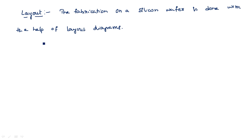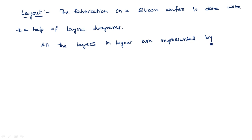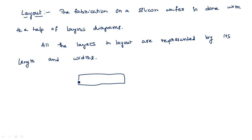Layout consists of all the layers in terms of length and width. All the layers in the layout are represented by their length and width. Suppose if you are drawing any line, you need to know what is the length of this wire and what is the width of this wire. This represents the width and this represents the length. Similarly, for every layer we should know the length and width representation of that particular layer.